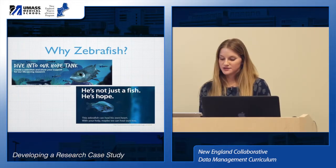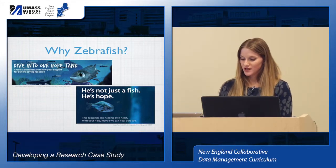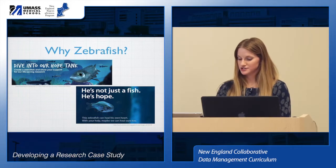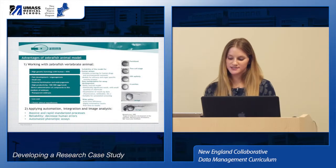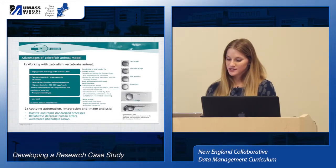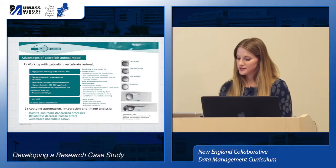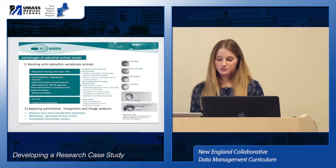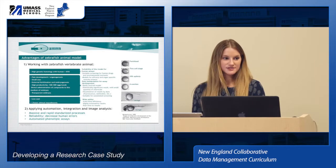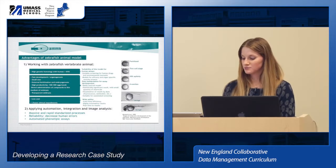Zebrafish larvae are easy to use as an experimental model organism — they are easy to see through and are used for many kinds of scientific research. So why zebrafish? The model is fully established, their genome is fully sequenced, they are well understood and easily observable. They have testable developmental behaviors, rapid embryonic development, large, robust, transparent embryos, and they can develop outside their mother. They also have similarities to mammalian models and humans.